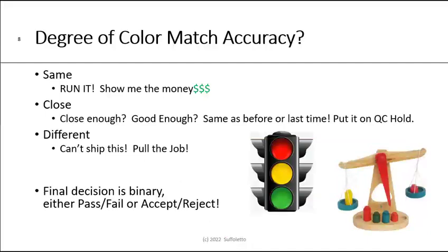Unfortunately you can't use only a three-category classification — the final decision is a binary decision: pass or fail, accept or reject, good or no good. Your decision depends on many things: you have to consider the expectations, needs, and wants of the customer; internal manufacturing and productivity efficiencies; and often the schedule — how late is the job. Another comment about the 'same' category: same means you don't see a difference, which is called a JND — just noticeable difference — and typically this is about a delta E of 1.0.